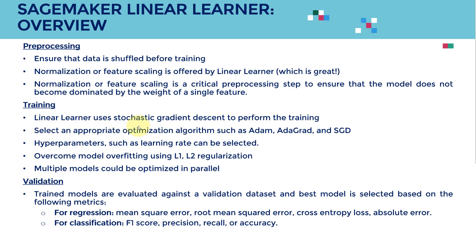Linear Learner uses stochastic gradient descent to perform the training. From a high level, we run an optimization problem that tries to find the best parameters — similar to least sum of squares. We can use different optimizers such as Adam or SGD, and there are many different parameters and algorithms we could use.